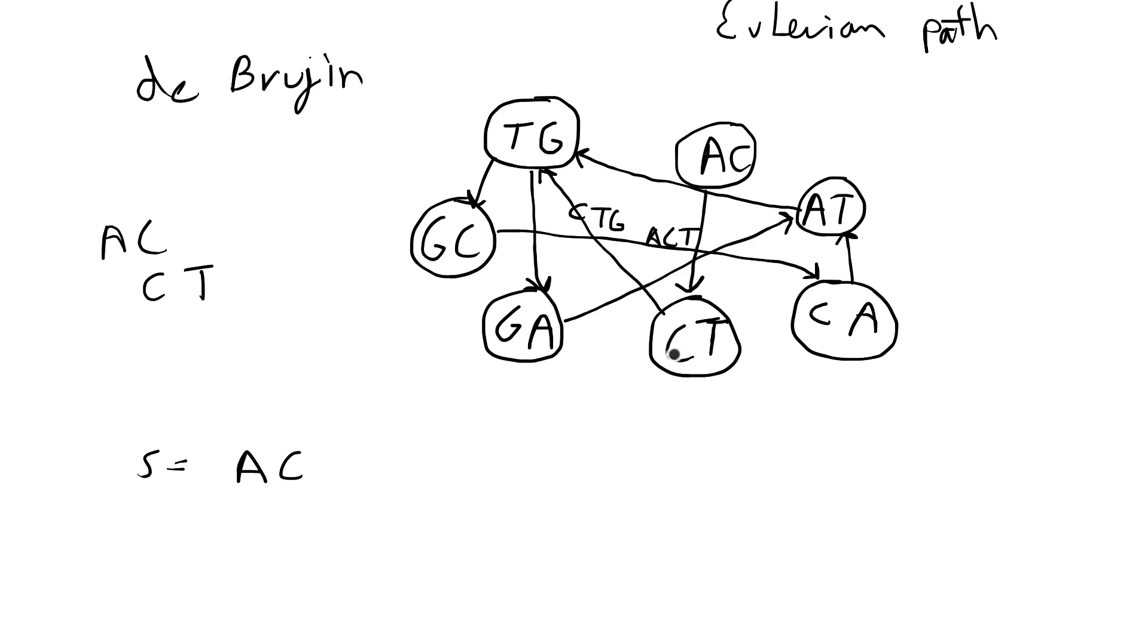Then C is an overlap here. So the first letter after AC is going to be T. So we have ACT. I'm going to mark this edge as 1. Then CT goes to TG. So it's going to be ACTG. This is edge 2.